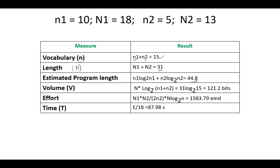Volume V, N, which is 31, multiplied by log to the base 2, n1 plus n2, and the result is 121.2 bits. Effort equals n1 multiplied by N2 over 2*n2 multiplied by N log to the base 2 n, which is 1,583.79 EMD. Time equals effort over 18 seconds, which is 87.98 seconds.